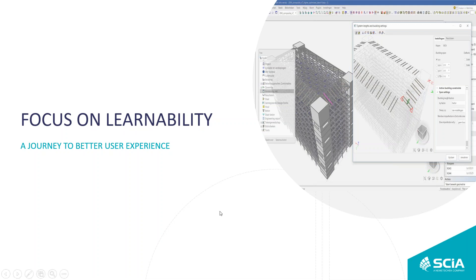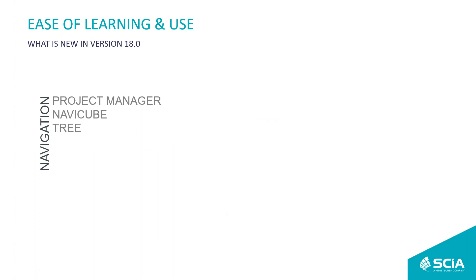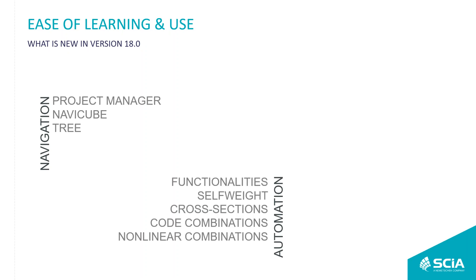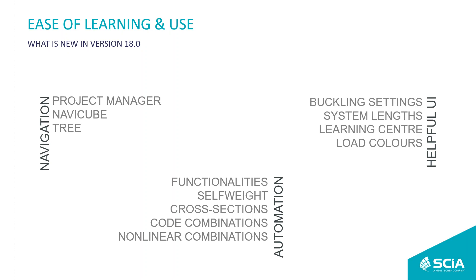I will start with three topics: improved navigation inside CI Engineer, automating some trivial steps of the design process, and creating a more helpful user experience and user interface inside the software. The first topic is navigation inside CI Engineer, related to the 3D window, the project manager, and the CI Engineer tree.